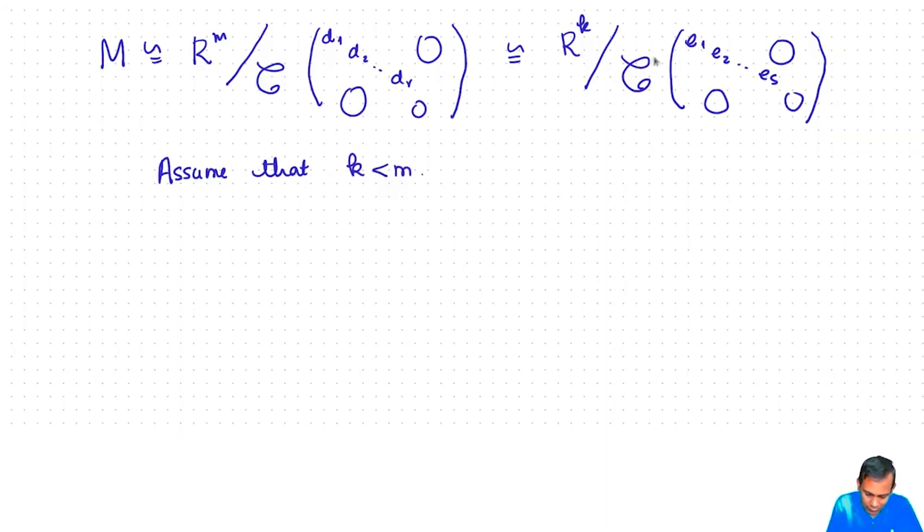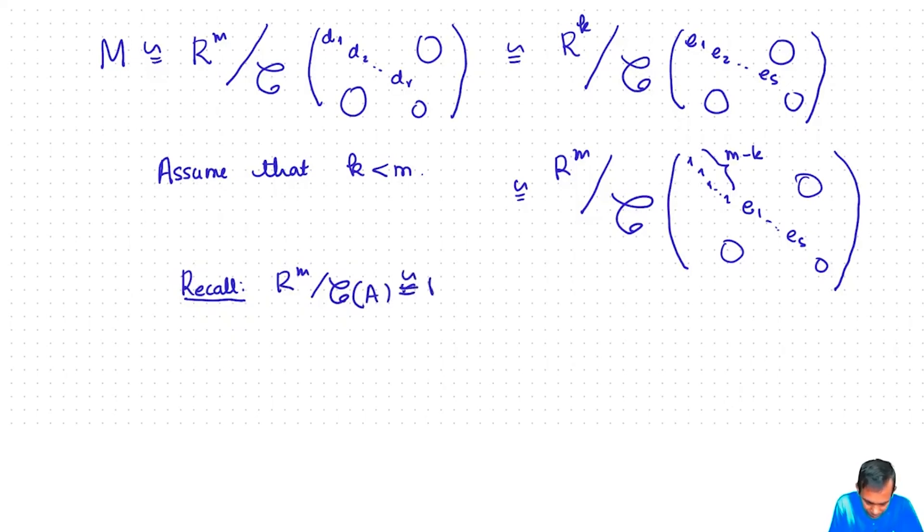Then what we can do is we can always change this a little bit and make k equal to m. What we can do is make this R^m mod column space of—and then I will put a bunch of ones here. How many ones? I will put m minus k ones. These will contribute R mod 1, m minus k copies of R mod 1, which is just zero, so it will not change the isomorphism class. And then I will put e1, e2, up to es, followed by zeros. What we have now is that M is isomorphic to R^m mod the column space of this matrix or R^m mod the column space of the other matrix.